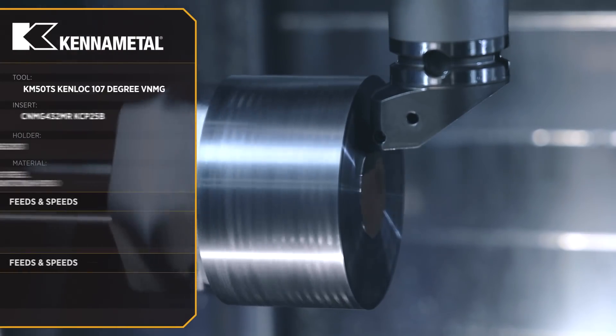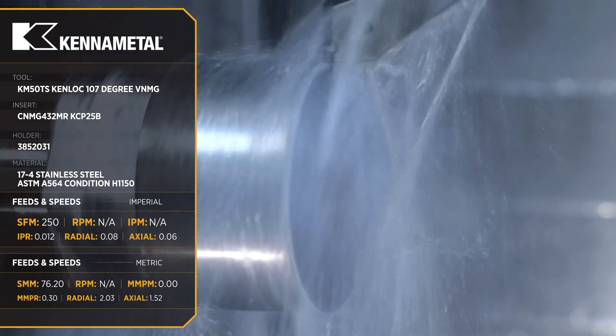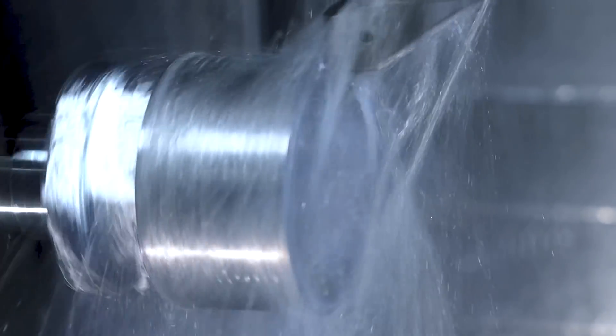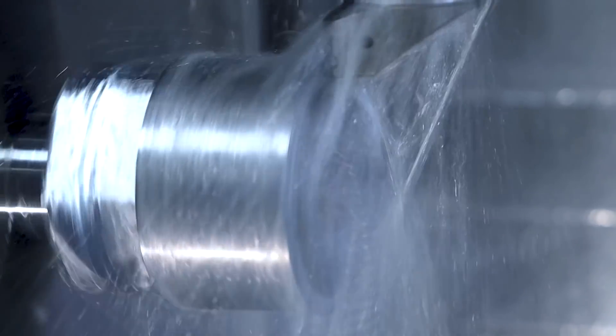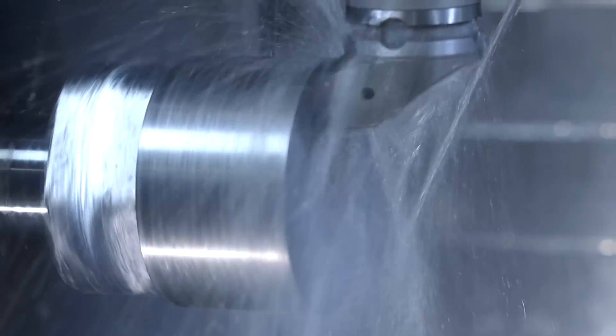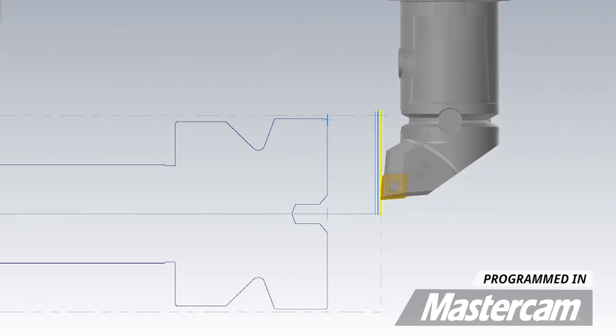We're running it at 250 SFM with a feed rate of 12 thousandths per revolution. Because this is the last operation and because of how much material is sticking out of the back, I'm going to drop my depth of cut to 60 thousandths per face pass and we're just going to creep it in to size.